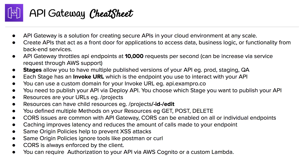API Gateway throttles API endpoints at 10,000 requests per second. That's definitely an exam question that might come up — where they say you're going beyond 10,000 and it's not working. That's why: there's a hard limit of 10,000 requests per second, and you have to request a service level increase.